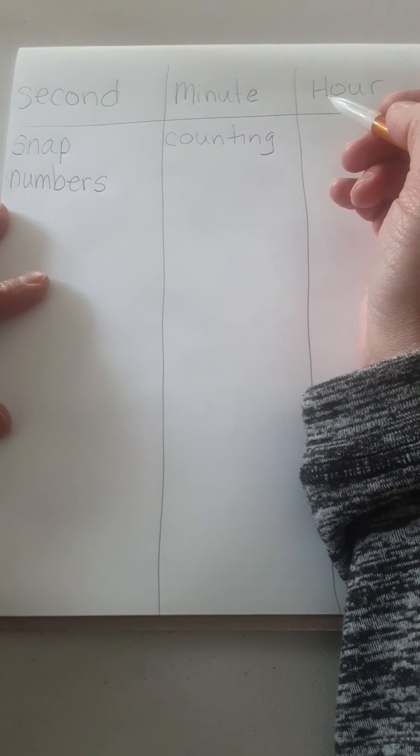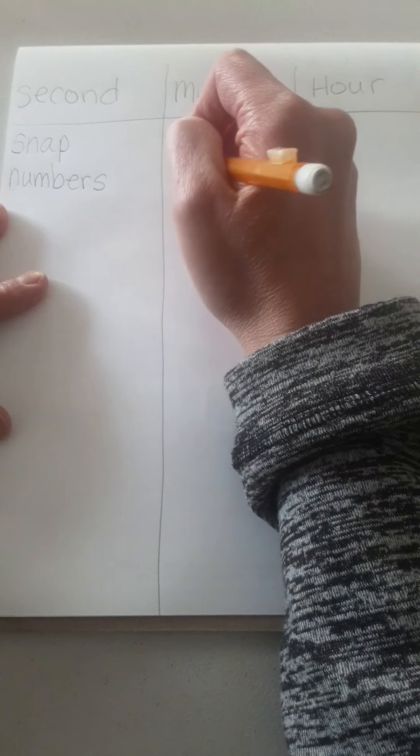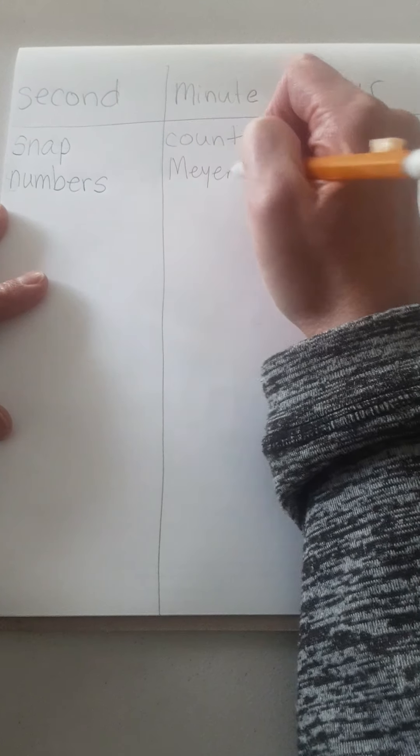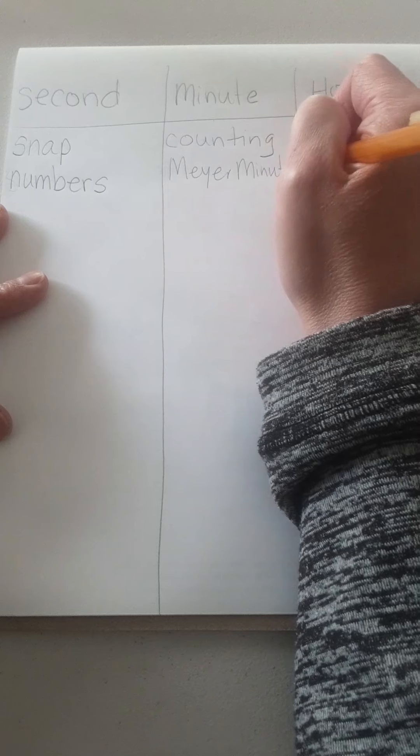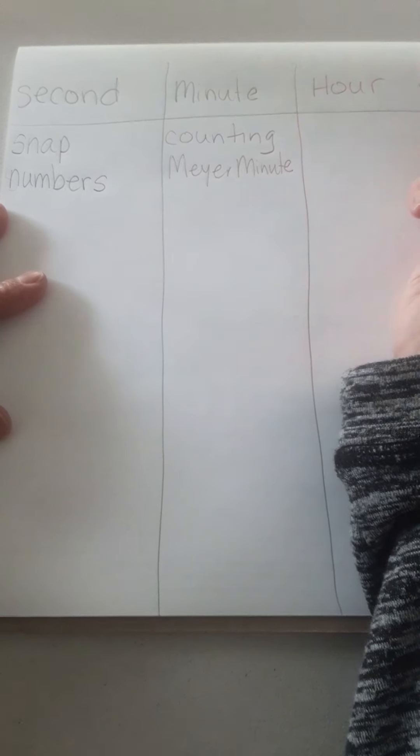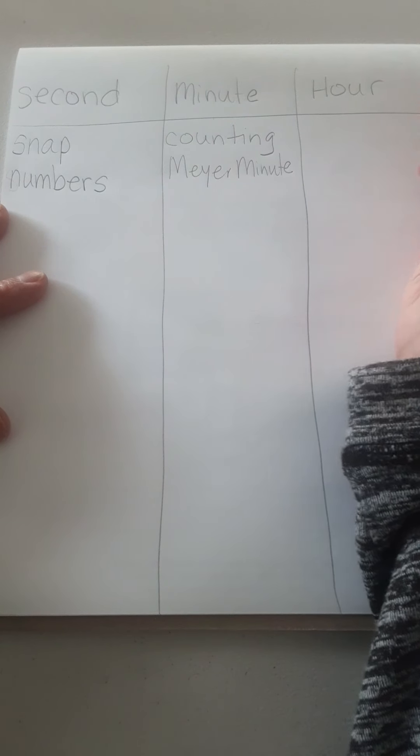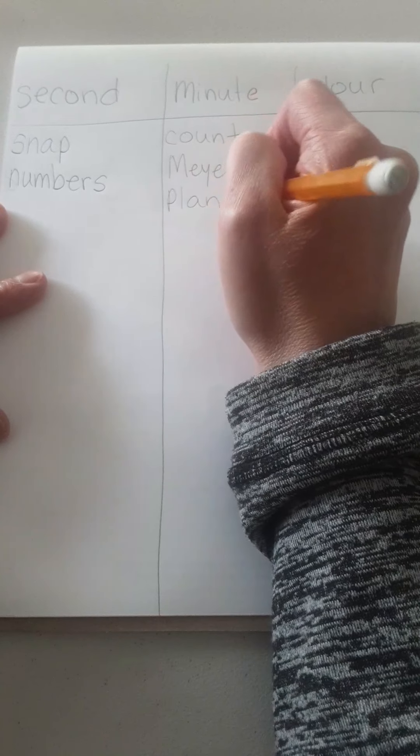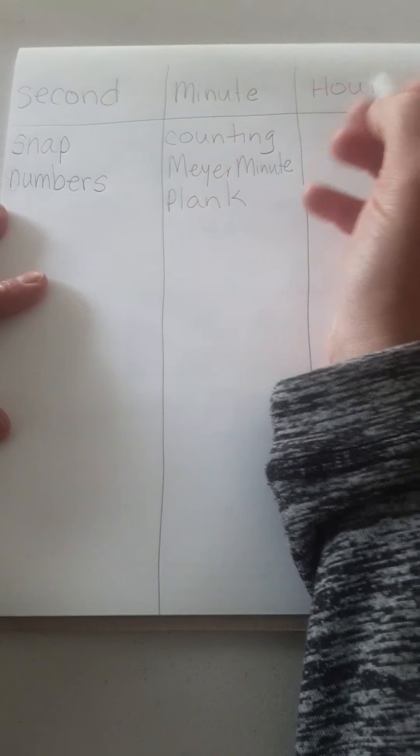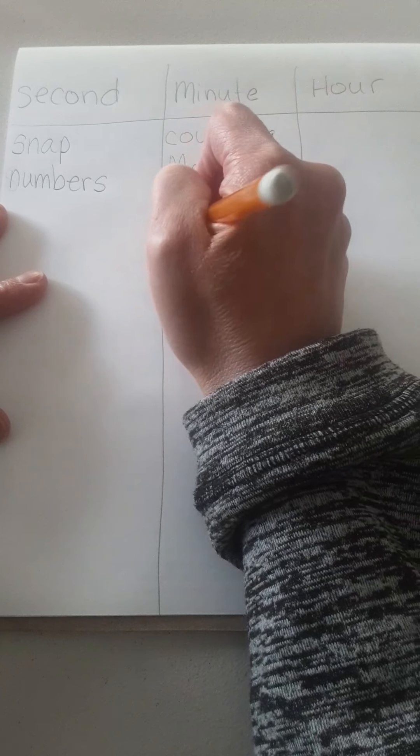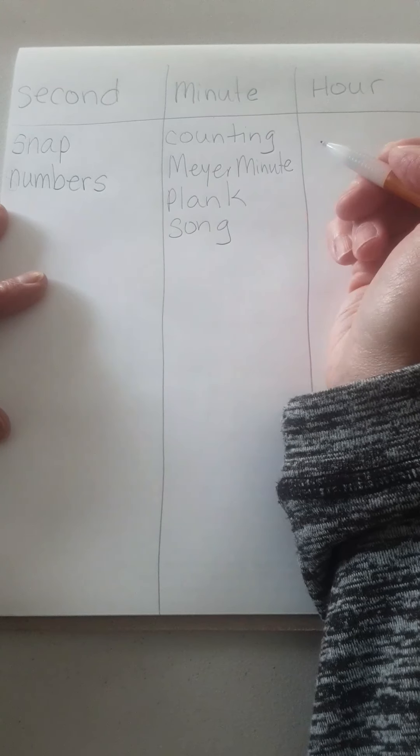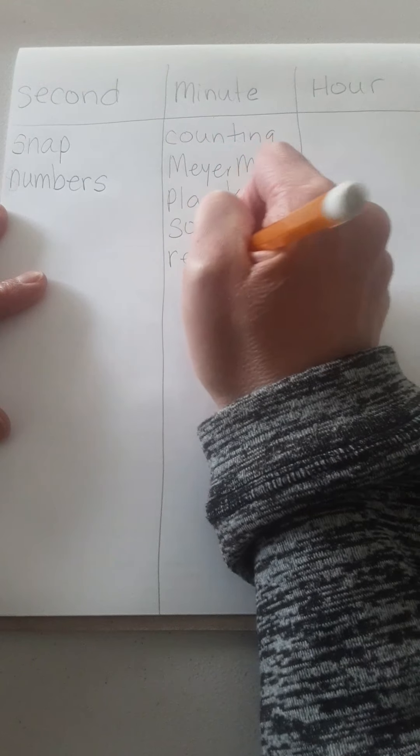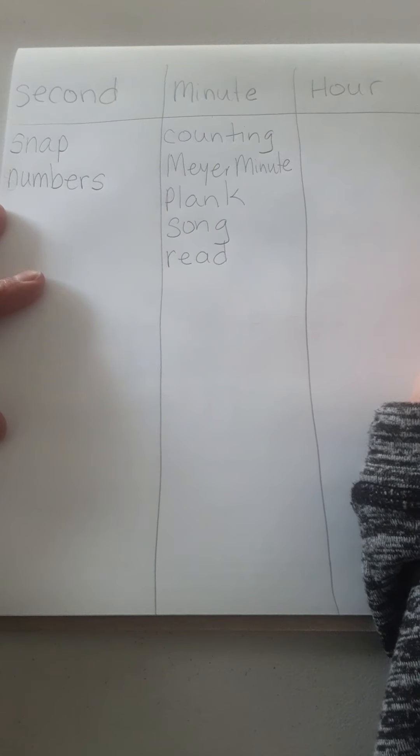Other things that take me a minute, well, if we were at school, we would be doing the Meijer minute, where we exercise for one minute. We've done the plank for a minute. You could sing a part of a song. When we're at school, you also read for me for one minute. So those are all things you can do in a minute.